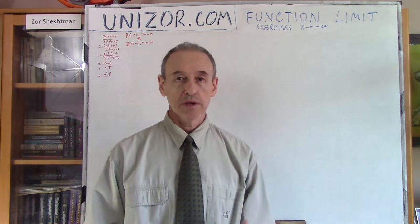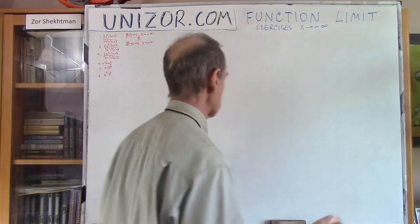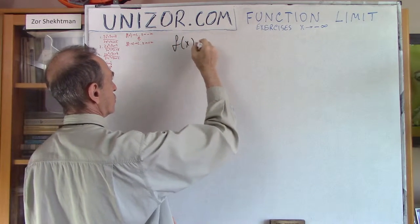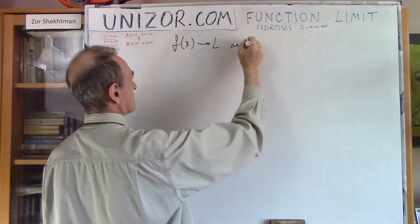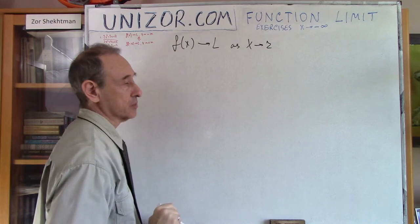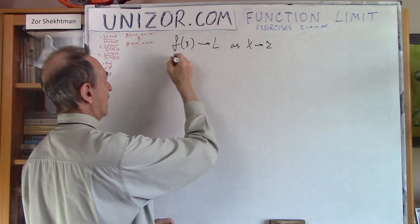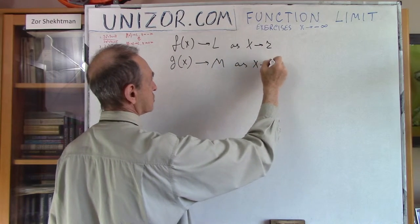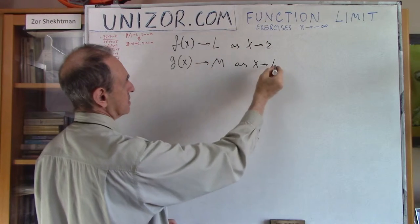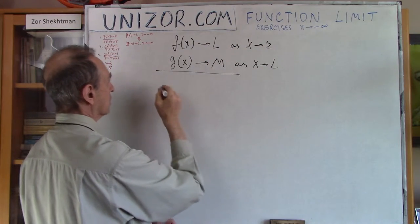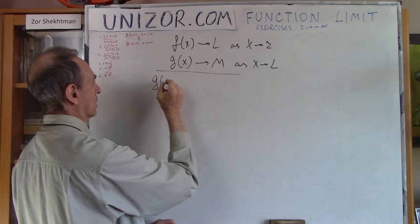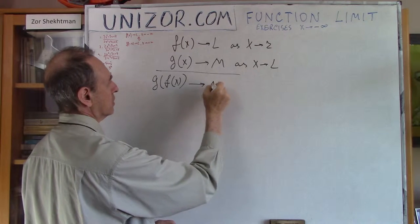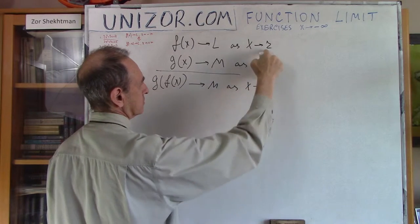We all know about compound functions and the limit of compound functions. If you have function f(x) which goes to some limit L as x goes to some limit point R, and another function which goes to M as its argument goes to L, then you can conclude that the compound function will go to M as x goes to R.